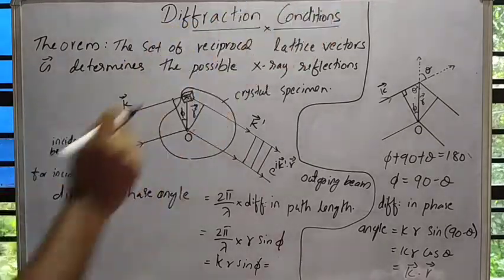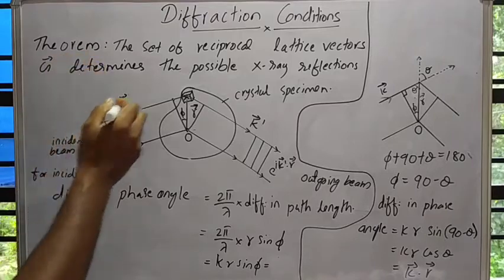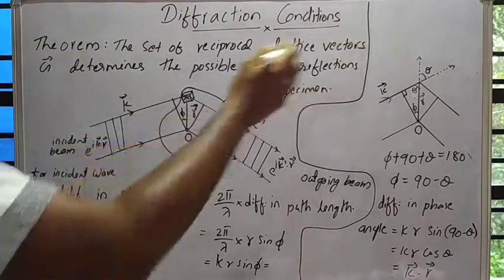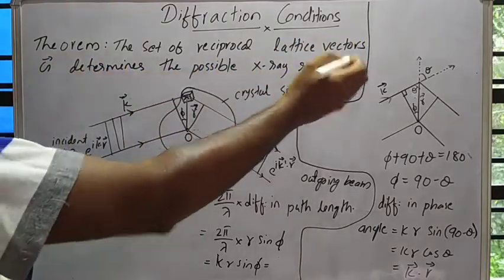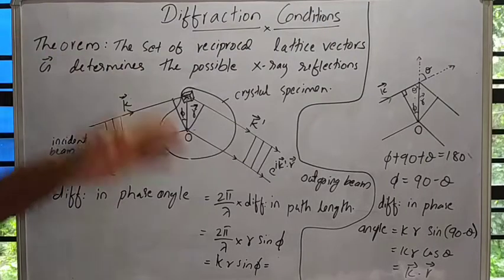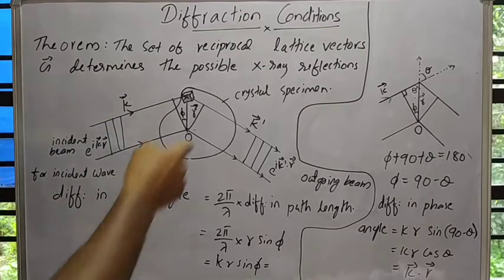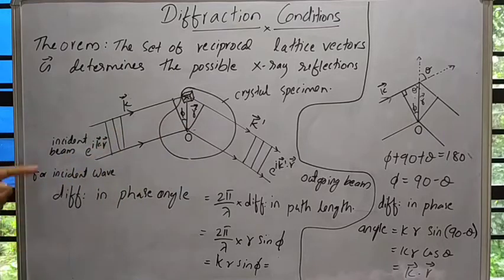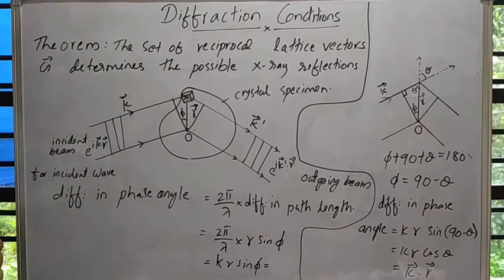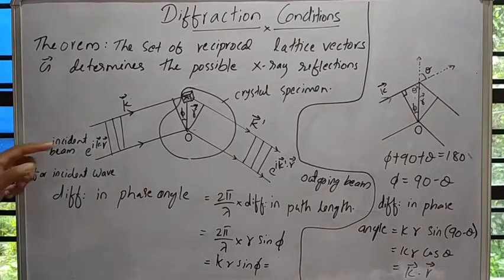Let us discuss diffraction conditions. The set of reciprocal lattice vectors G determines the possible X-ray reflections. Consider a sample of crystal and a beam of X-rays incident on it, which can be represented as e raised to ik·r, where k is the wave vector of the incident beam.